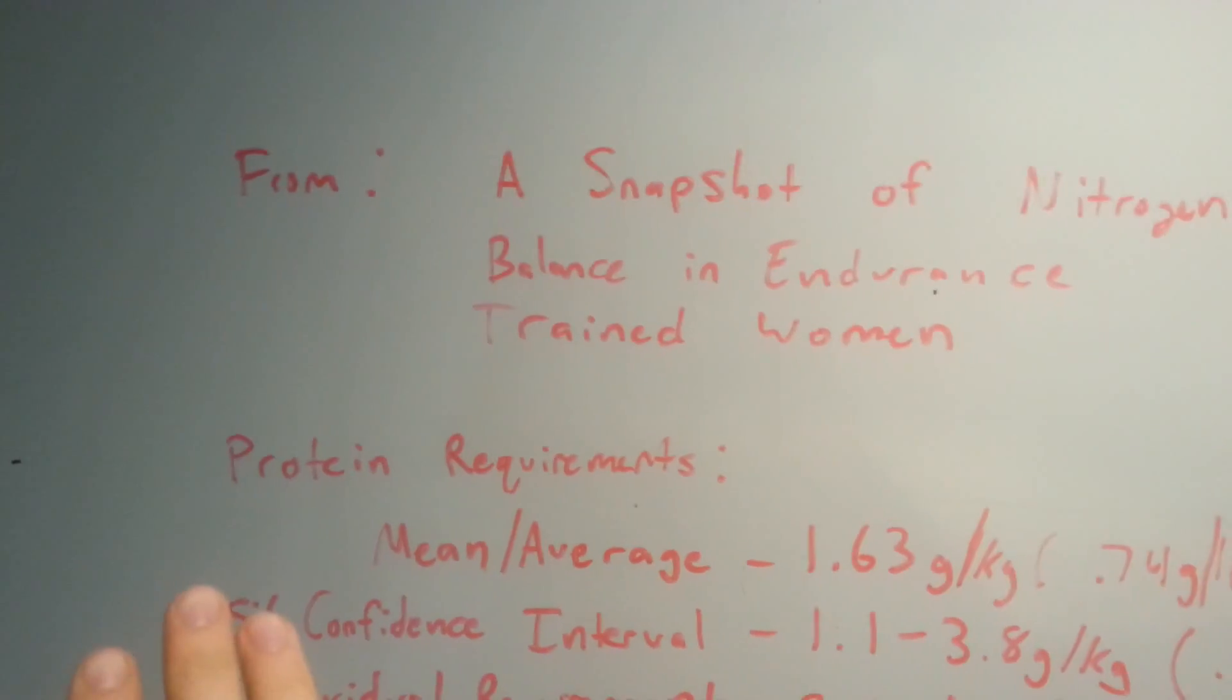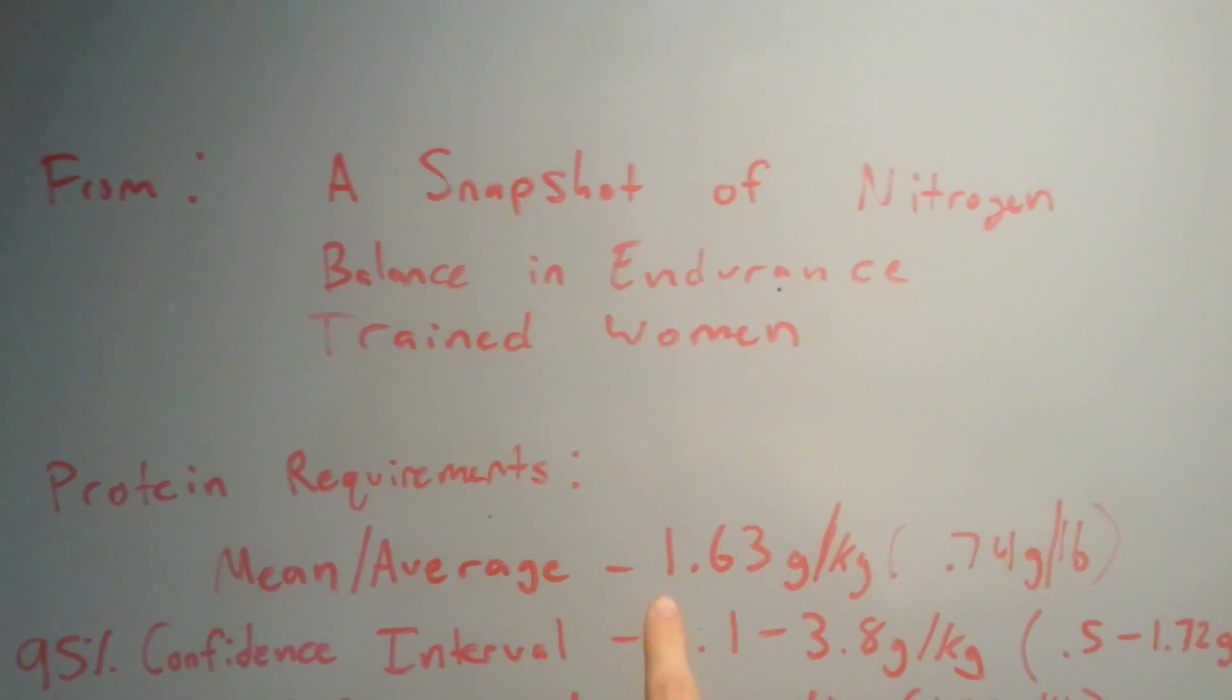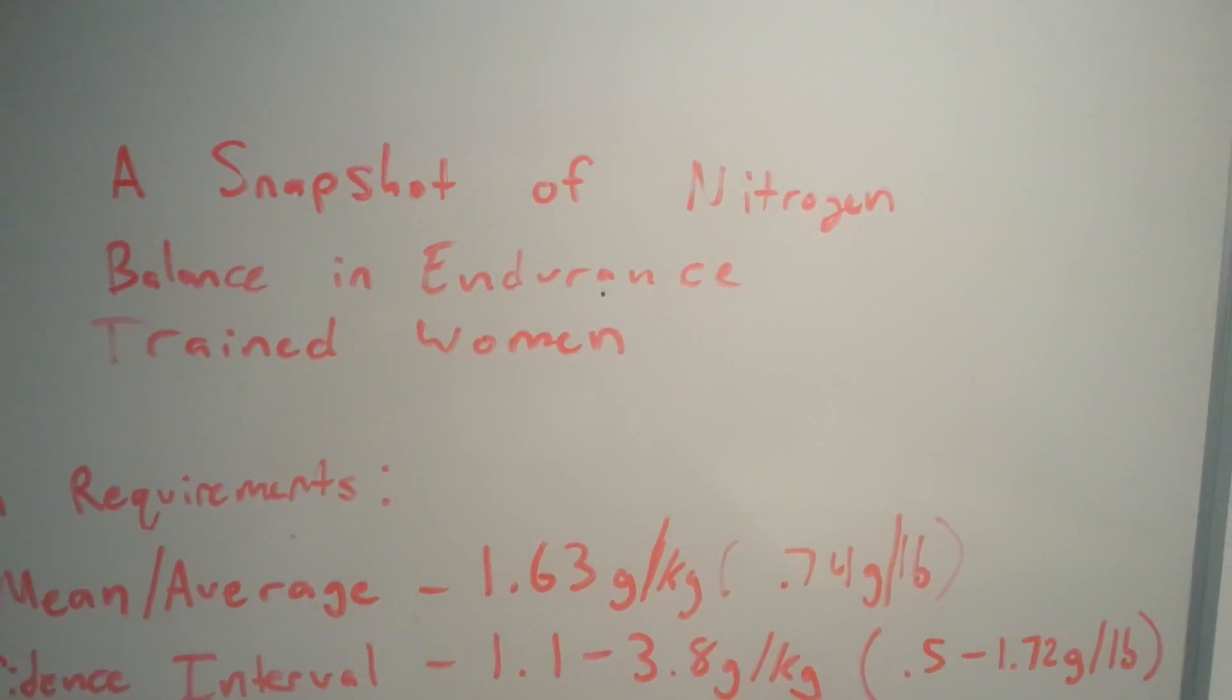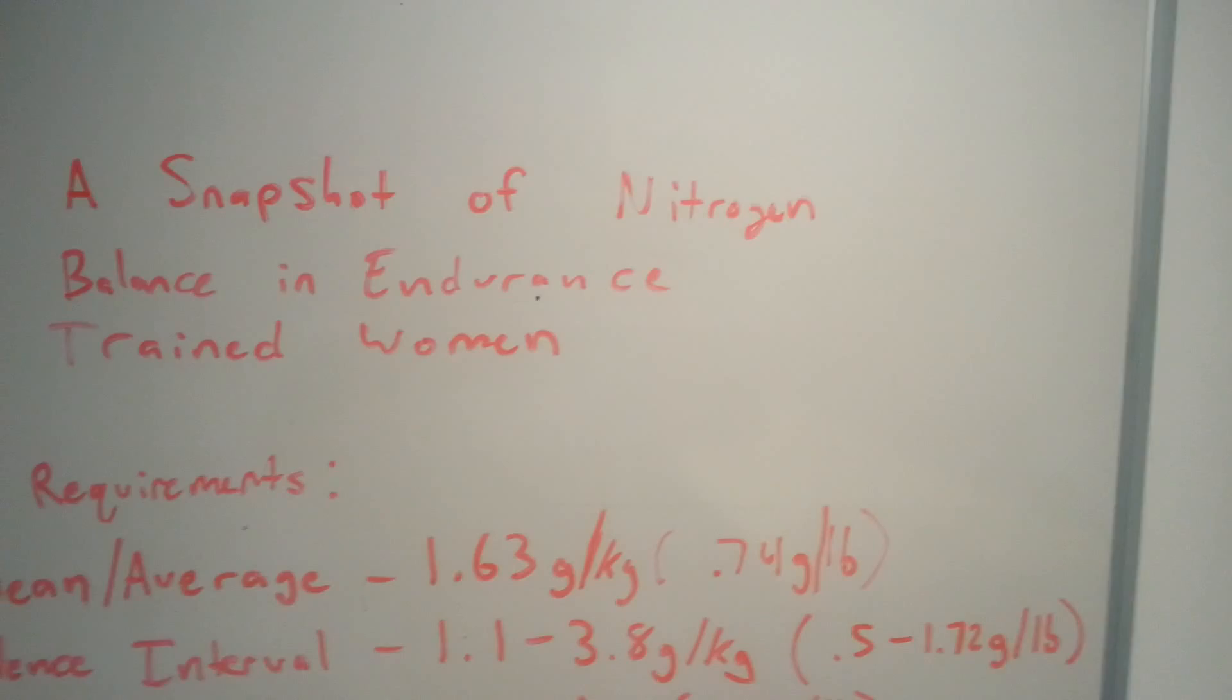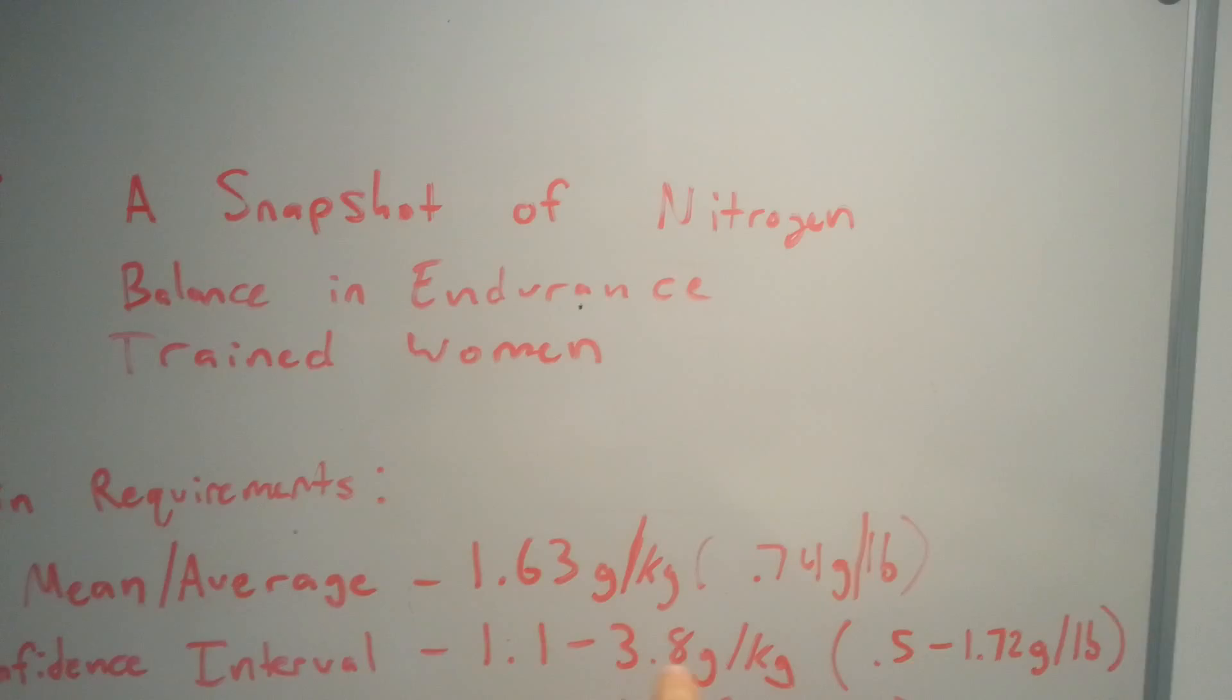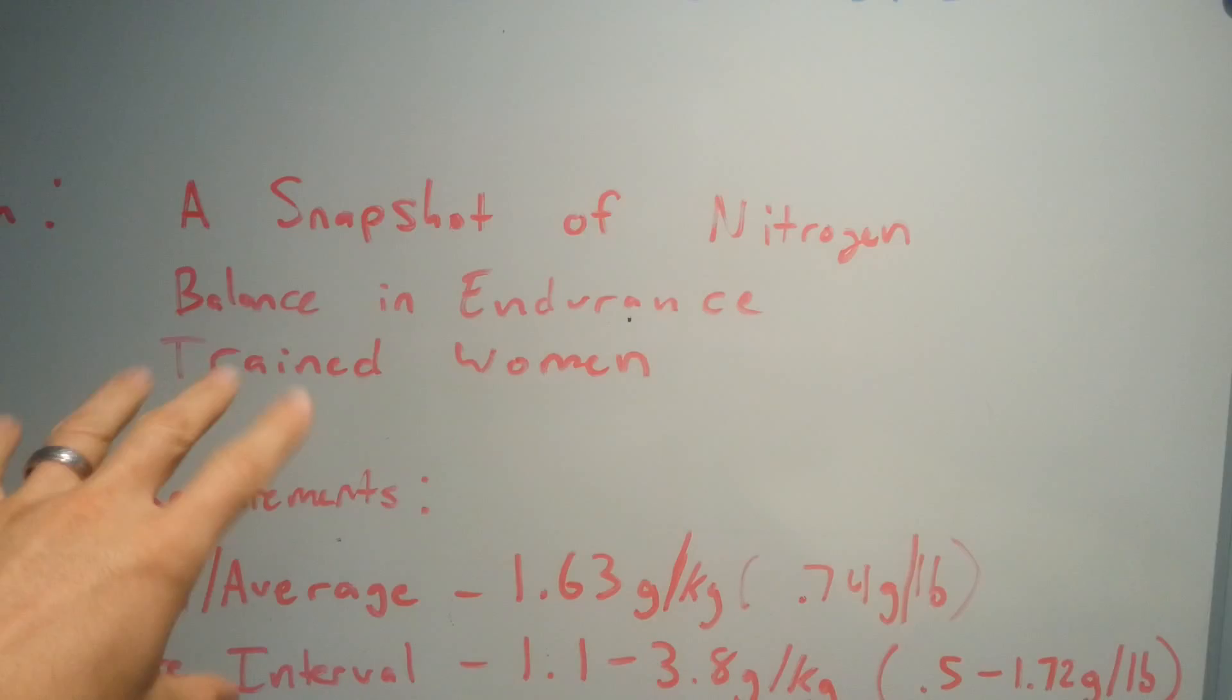The average is 1.63, however what a 95% confidence interval means is that we have, with 95% confidence - we can say there's only a 5% chance of us being wrong about this - this is the range of protein requirement that the true population that this study is meant to represent theoretically should have. If we were to take every single endurance-trained woman in the world and figured out their mean protein requirement, it should fall with 95% confidence within this range.